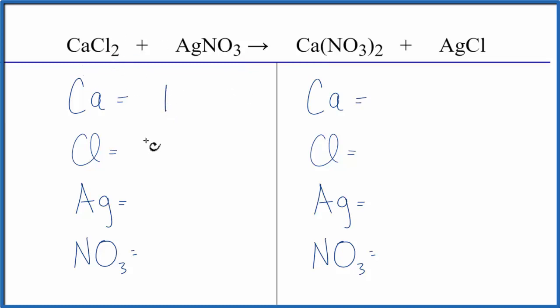We have one calcium, two chlorines, one silver, and then because I have this nitrate, this polyatomic ion NO3 here, then I have them here, I can just count this as one item. So I'm going to say I have one nitrate ion here.